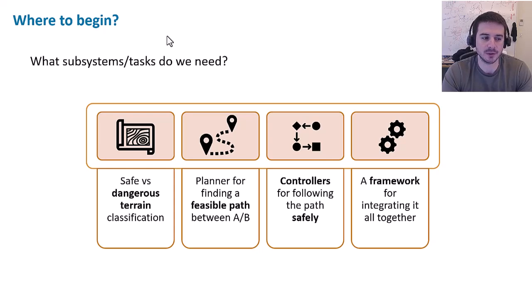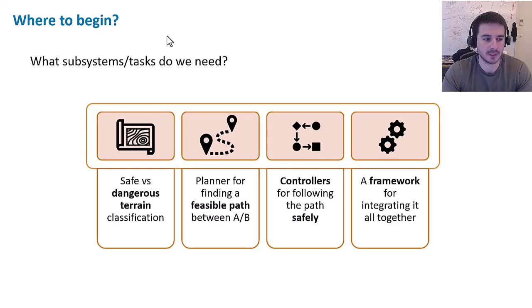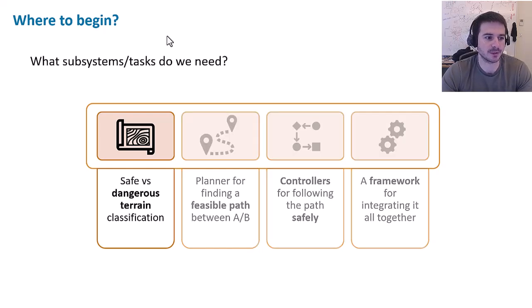The first thing we wanted to do is determine what was safe versus dangerous terrain and classify this so that downstream planners could use it to safely navigate from point A to point B. Once we had this representation, we needed to develop planners to find feasible paths between those two points, then create controllers for following the path — both safely avoiding obstacles and accounting for vehicle kinematics — and lastly a framework for tying it all together. We'll start with terrain classification.